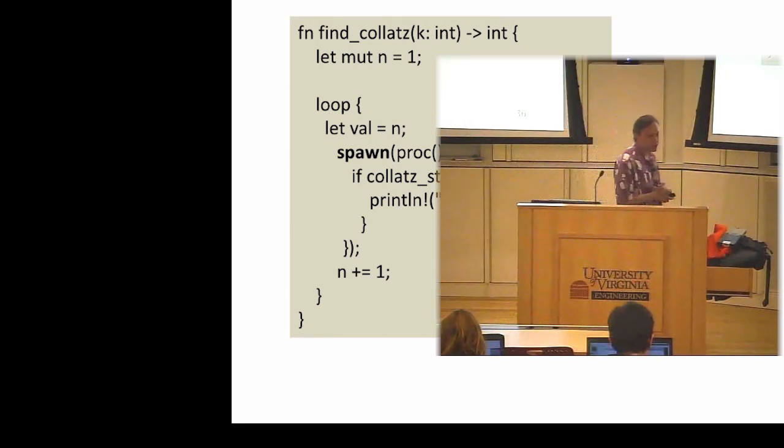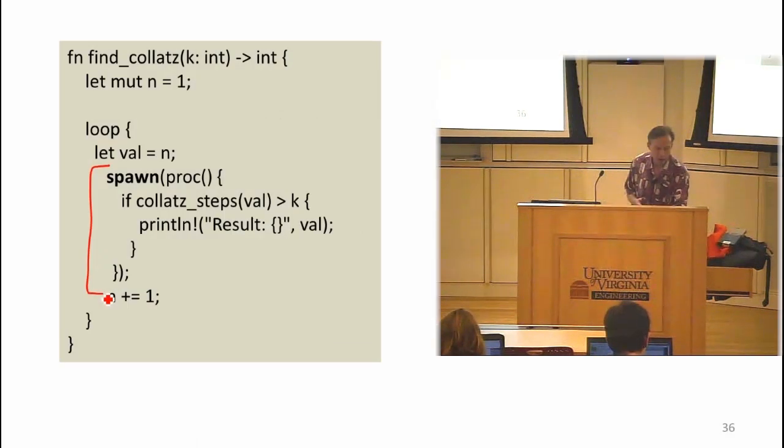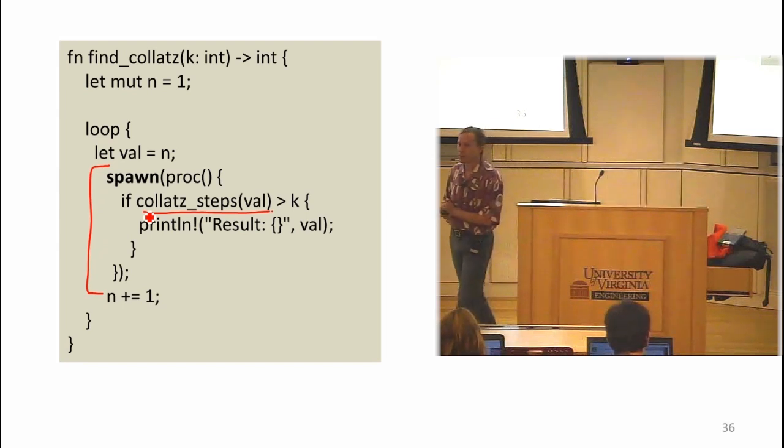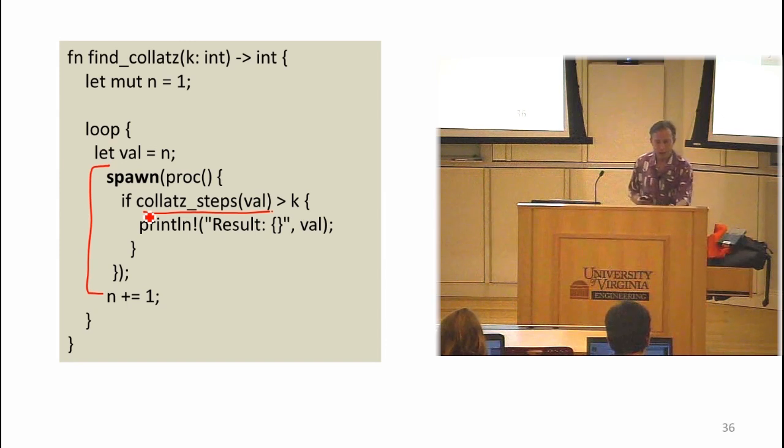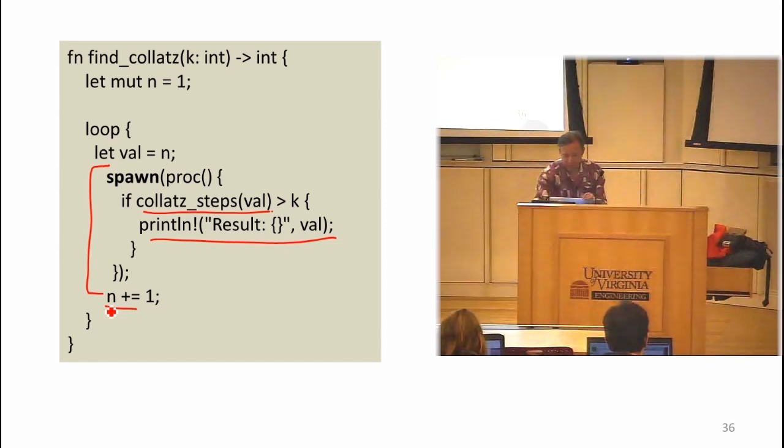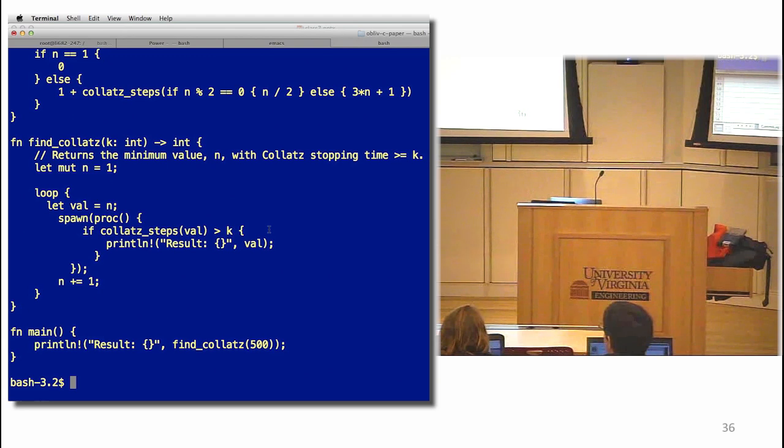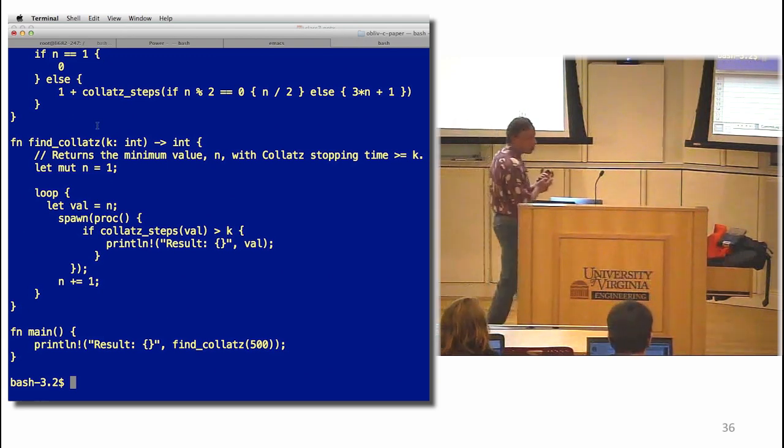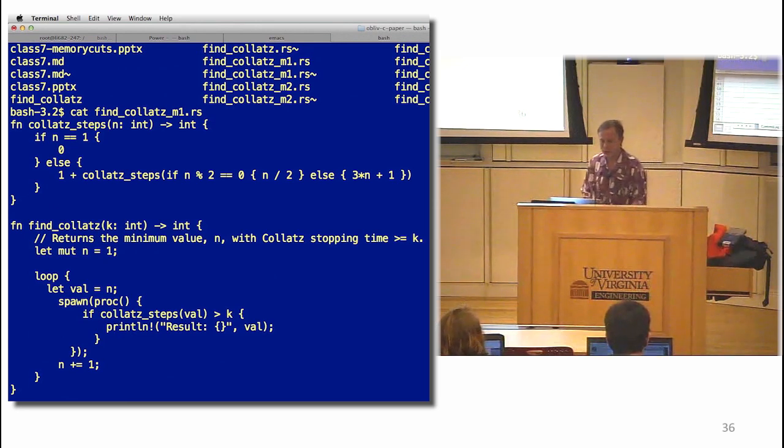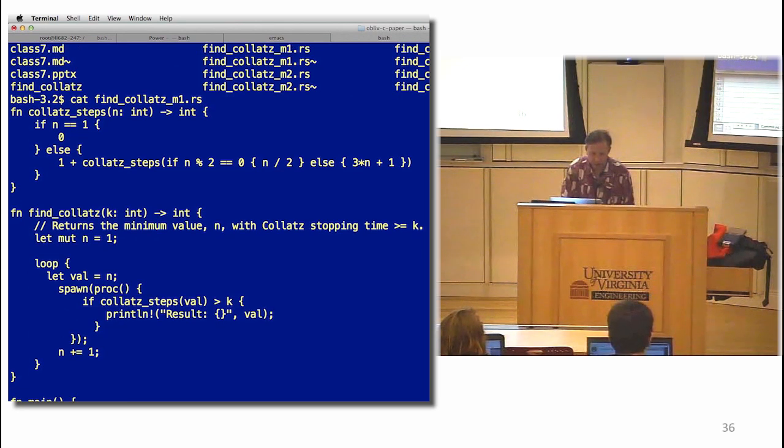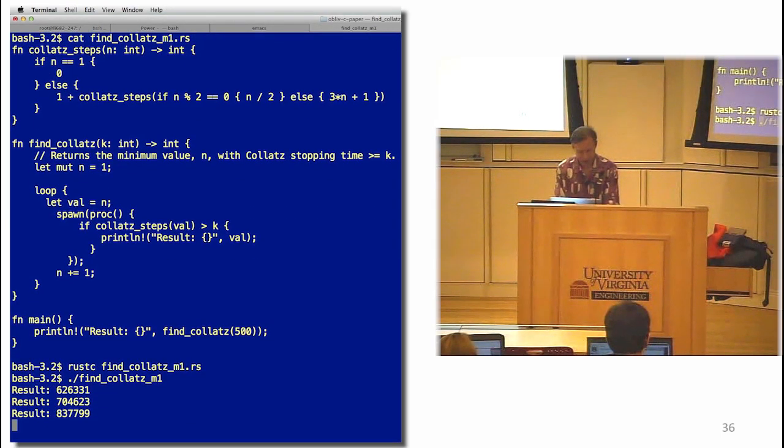So here's my first very bad attempt to do so, but at least illustrates how to spawn tasks. I've got a loop, so now I'm spawning each of these calls to collatz steps in a separate task. And if I get one that's greater than k, it's going to print the result. And it's going to keep going. What do you think is going to happen when I run this? So what do you think we're going to see when I run this? Is it going to find the number that I'm looking for? So I'm spawning all these processes, all these tasks, so I'm not running processes. I should make sure to speak correctly. So I'm spawning all these tasks.